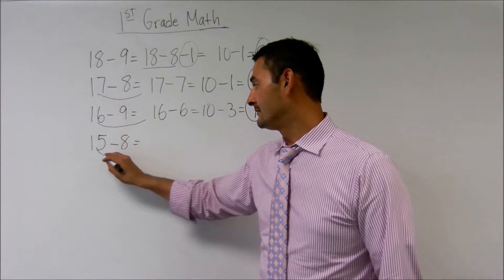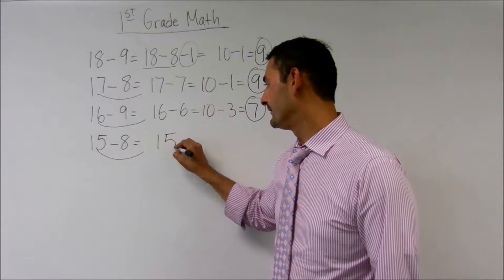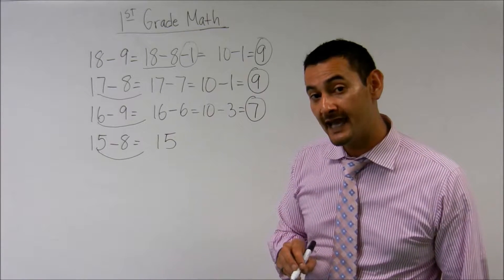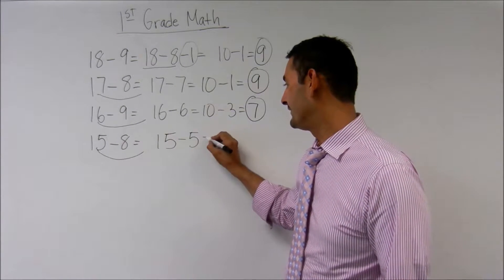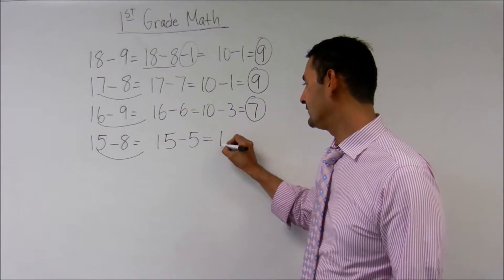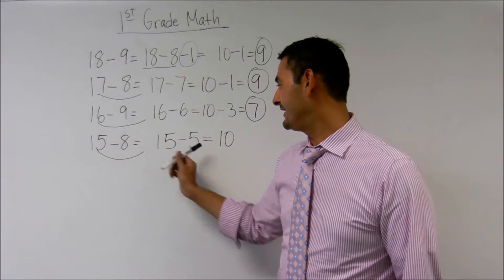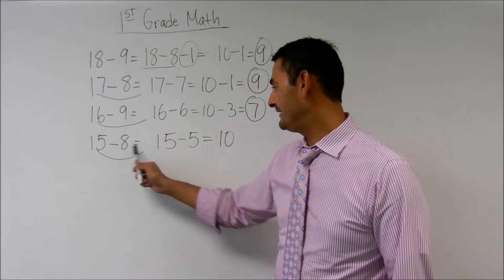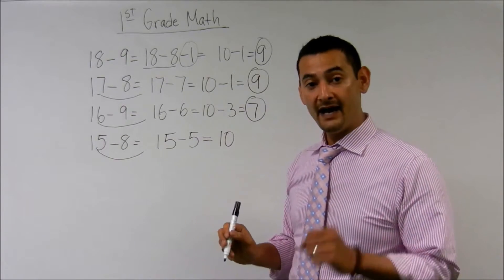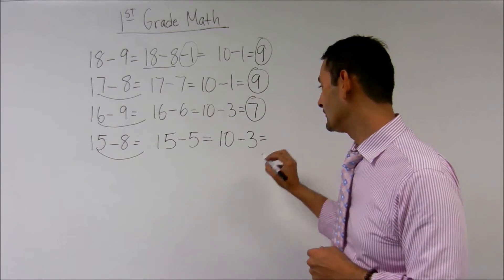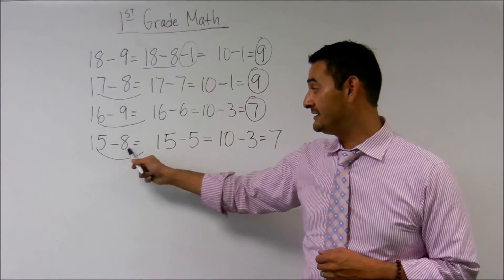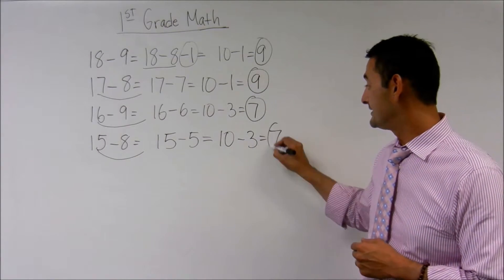15 minus 8. I'm going to move this 15 over. 15 minus what equals 10? That's right, boys and girls. It's going to be 5. 15 minus 5 equals 10. And here I've got a 5 and an 8. 8 and 5. 5, 6, 7, 8. I need 3 more. Minus 3 equals 7. 15 minus 8 equals 7.